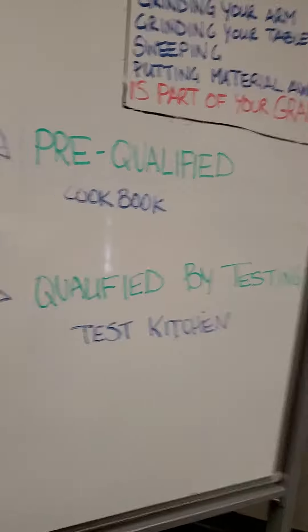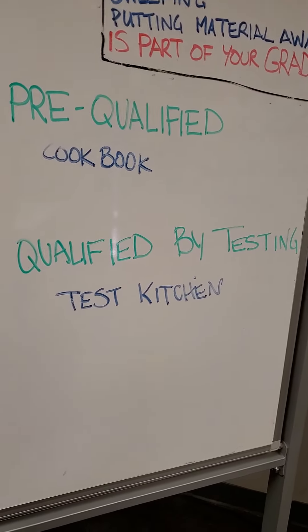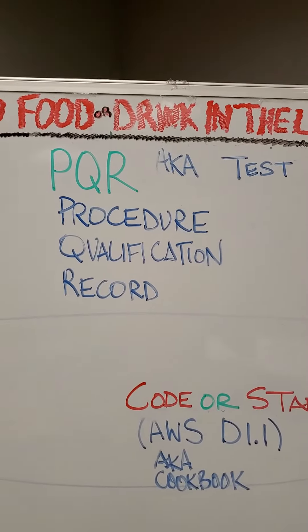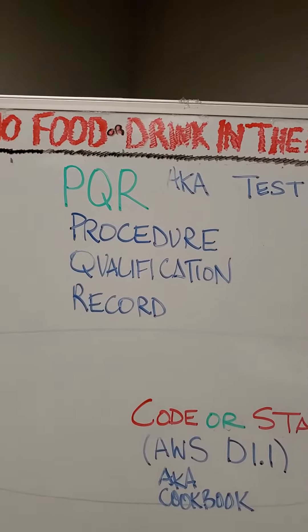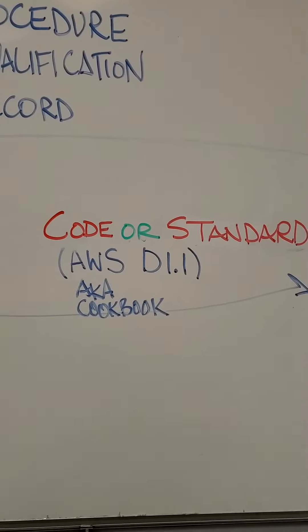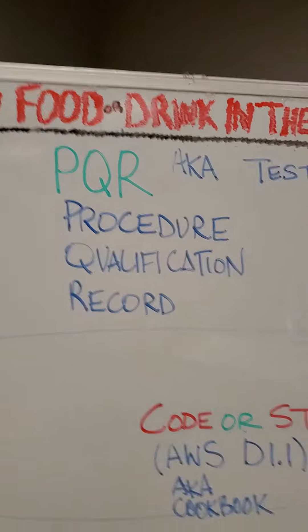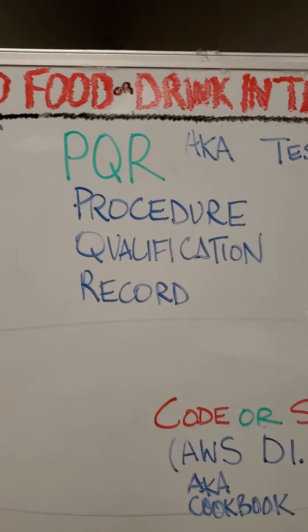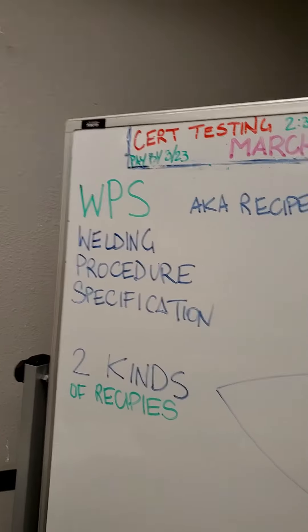But maybe there's something that's not in the code standard that has been qualified, so we have to qualify it by testing it. In order to do that, we have to go to a test kitchen. Our test kitchen is our PQR, our procedure qualification record. So in order for us to have a WPS, we have to have a PQR that backs it up, or a code standard that backs it up. With our PQR, we're going to take all of the properties and everything that we want in this weld — the joint and all of those types of things — and we're going to test it, we're going to break it, and do all sorts of testing required by that code or standard so this WPS can be done.